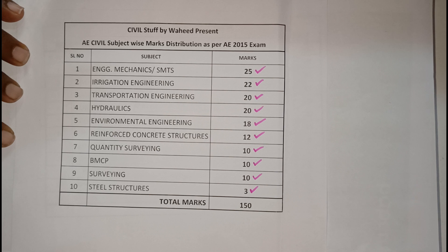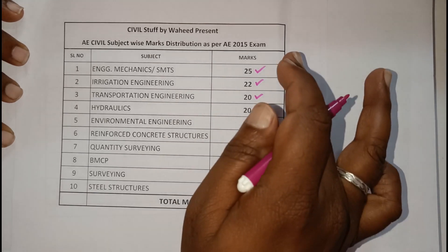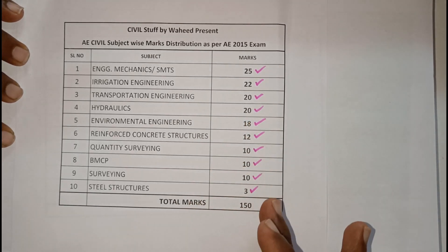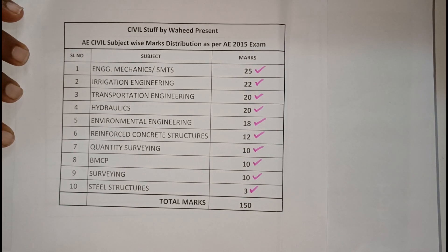As per my knowledge, steel structures may be removed this time because as per the current syllabus it is an optional subject. Many colleges are not opting for it since it is an elective subject. Therefore, some variation of 2 to 5 percent may occur.